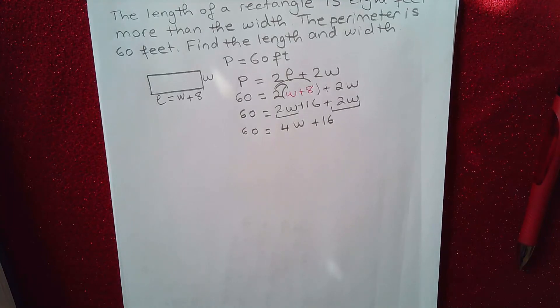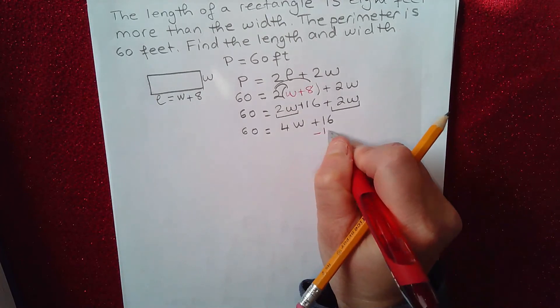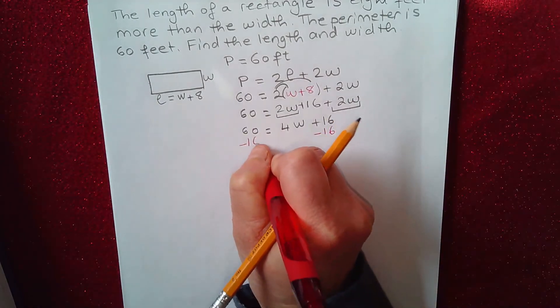Now we have a linear equation with one variable. I need to isolate W on the right side. So what I need to do is subtract 16 from both sides.